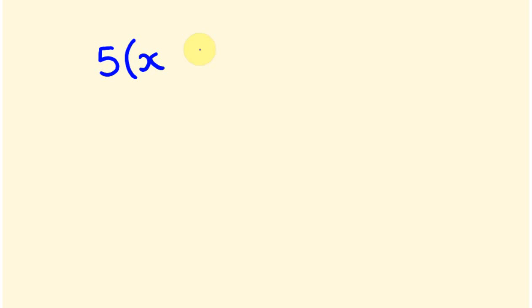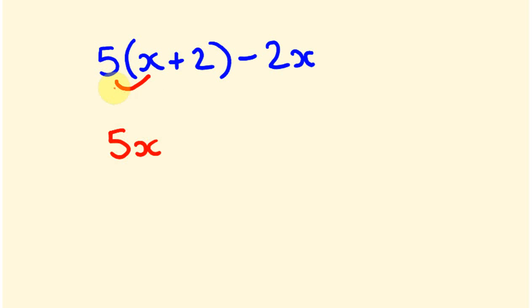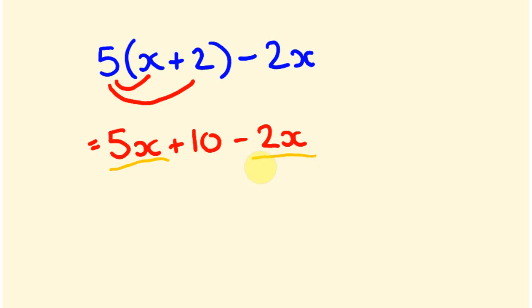What about a slightly harder one? Say we have 5(x+2) minus 2x. First, let's expand the brackets. 5 times x is 5x, and 5 times positive 2 is positive 10. And then we have this minus 2x expression. We can take this a step further because we have like terms: 5x and minus 2x. Grouping these together, 5x minus 2x is 3x, and we have this positive 10. So we get 3x plus 10.